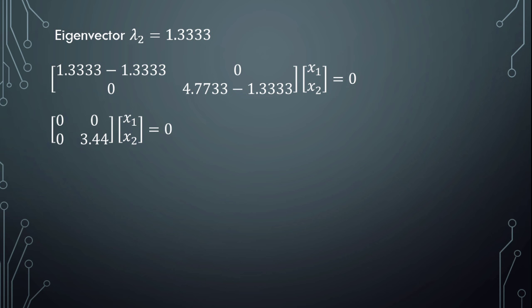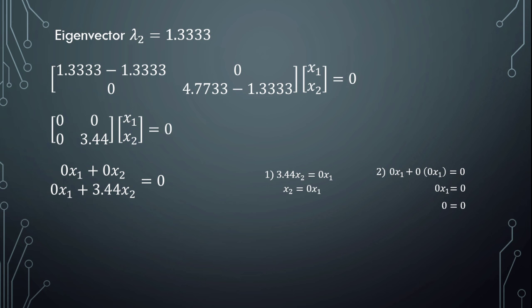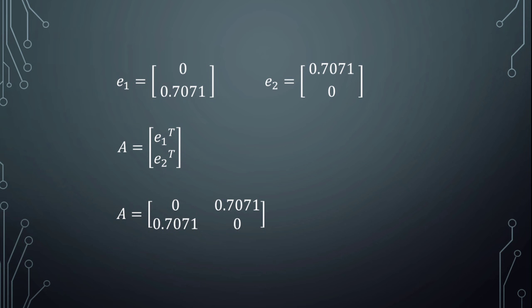Solving the system for lambda 2 equal to 1.3, we find x1 equal to 1. So eigenvector number 2 is (1, 0), but in MATLAB normalized to (0.7, 0). These are our two eigenvectors. To obtain the transformation matrix, we transpose them into a new matrix called A, which results in: row 1 is (0, 0.7) and row 2 is (0.7, 0). This is our transformation matrix.